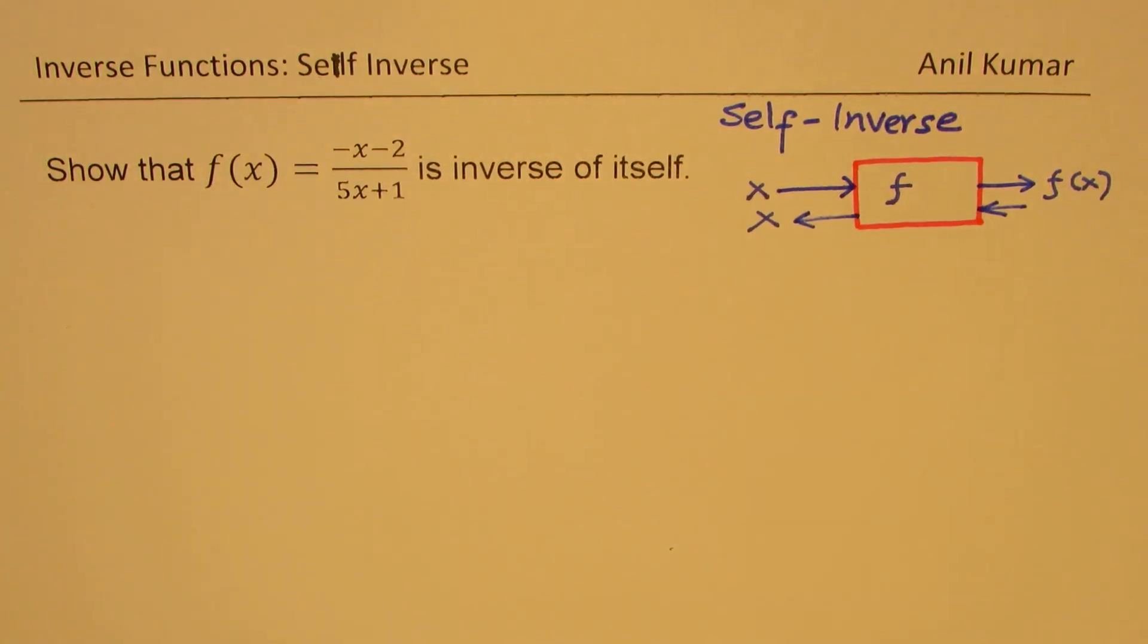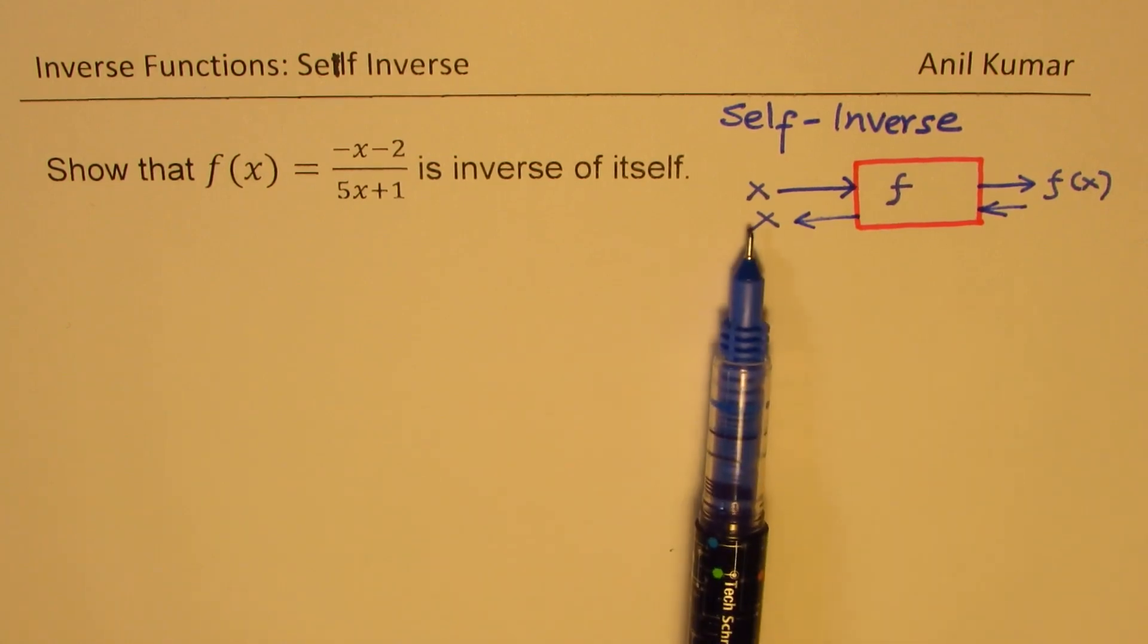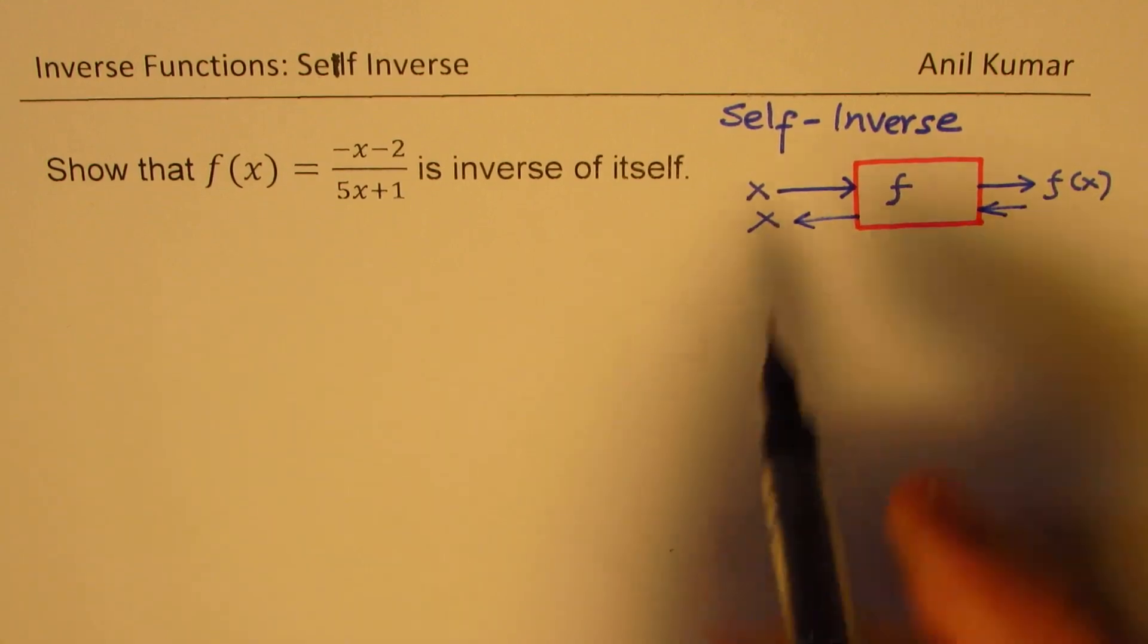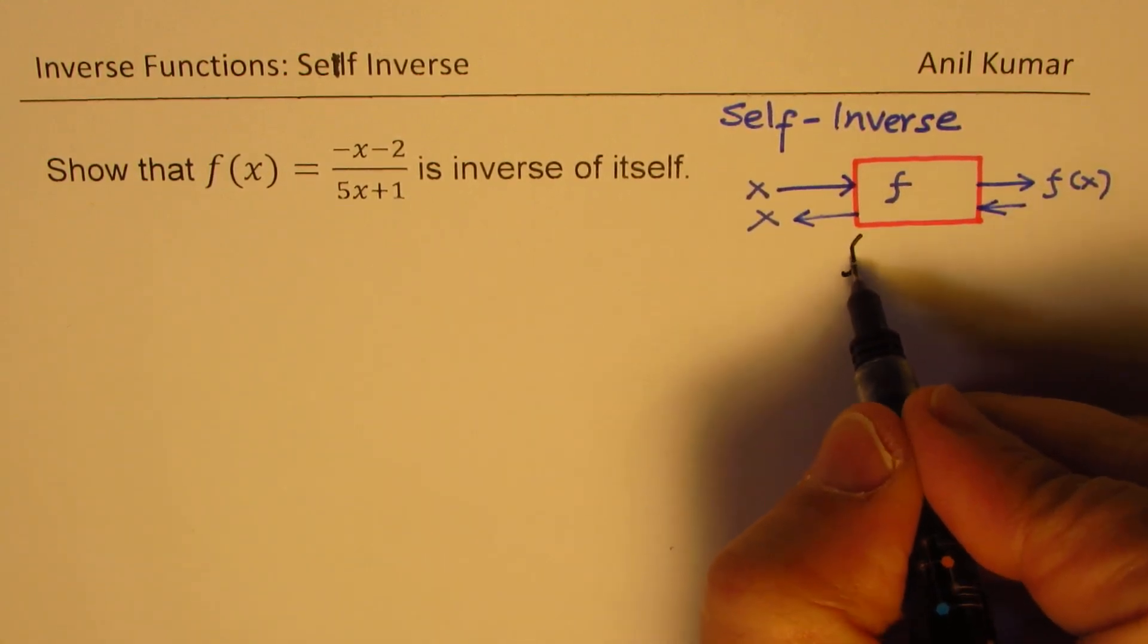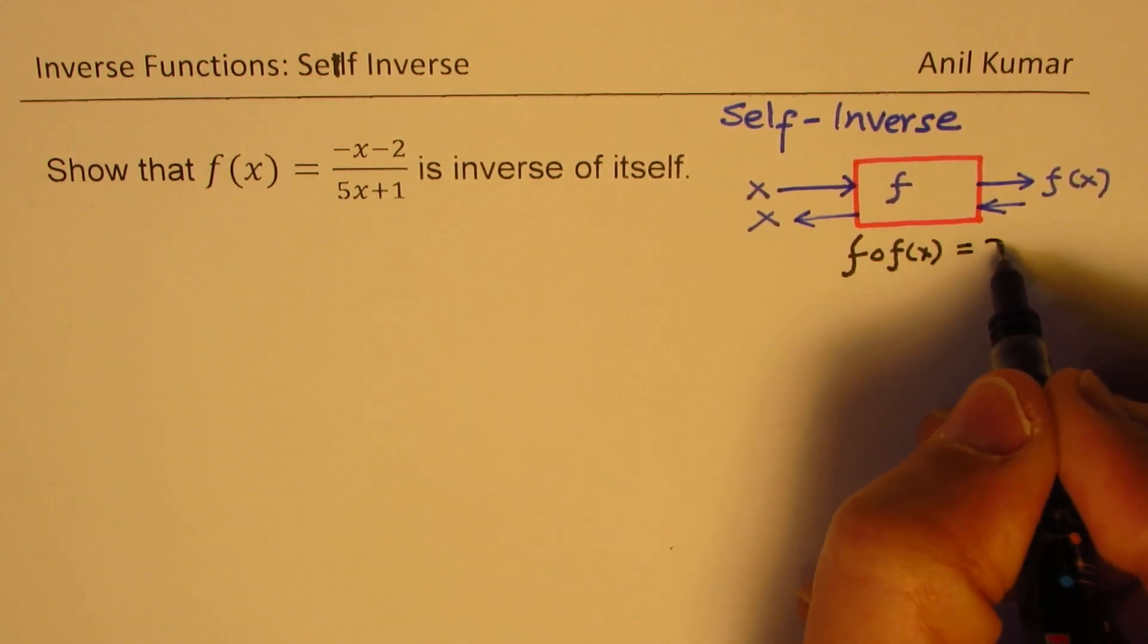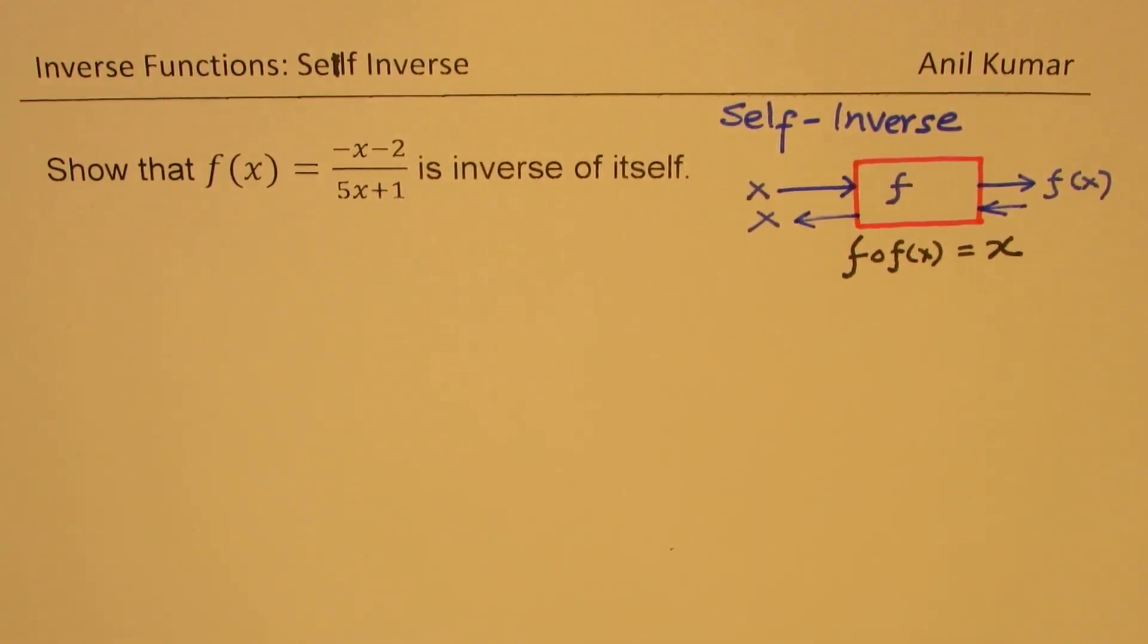So basically, we are operating this function on function and what are we getting? We are getting x as the output. So that's the whole idea. So that means if I do f of f of x and if I get x as my output, then it is a self-inverse function.